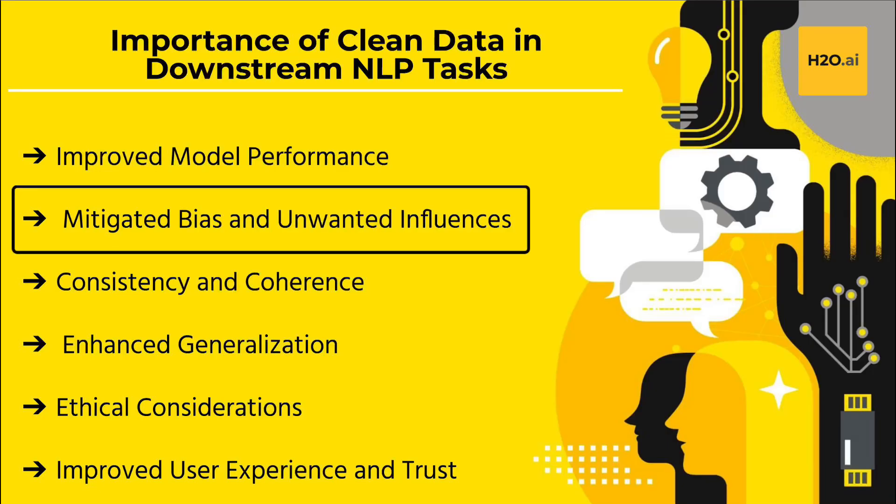Second, mitigated bias and unwanted influences: cleaning the data helps reduce biases and unwanted influences that may have been present in the training data. Bias in the data can affect the model's predictions and outputs. Through careful curation and cleaning of the data, efforts can be made to minimize the impact of biases, resulting in fairer and more equitable outcomes.